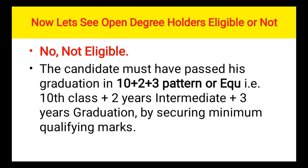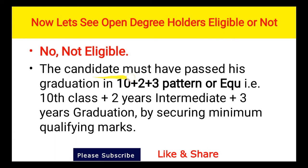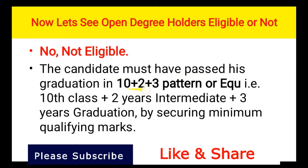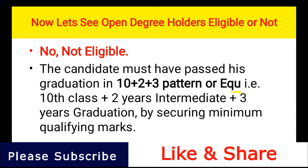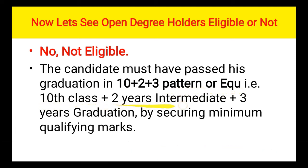Now coming to the point — are open degree holders eligible or not? They are NOT eligible. Those who, without intermediate or 10th, appeared for an eligibility test at age 18 and completed an open degree are not eligible. The candidate must have passed graduation in a 10+2+3 pattern — that is, 10th class, plus 2 years intermediate, plus 3 years graduation — by securing the minimum qualifying marks.